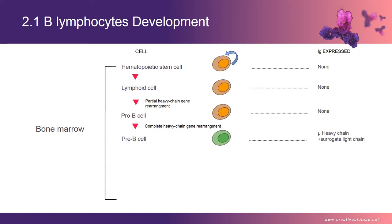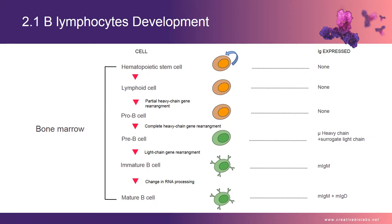Surrogate light chains resemble actual light chains but are the same on every pre-B cell. Following proliferation, small pre-B cells, no longer dividing, undergo V-J joining on one L-chain chromosome. Once the L-chain has been successfully synthesized, it is expressed with the mu-chain on the cell membrane and the cell is called an immature B-cell. Immature B-cells are very sensitive to antigen binding, so if they bind self-antigen in the bone marrow they die. B-cells that do not bind self-antigen express delta-chain and membrane IgD along with IgM, about the time they leave the marrow, and become mature naive resting B-cells.